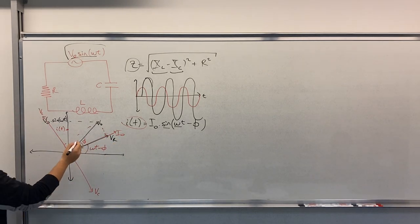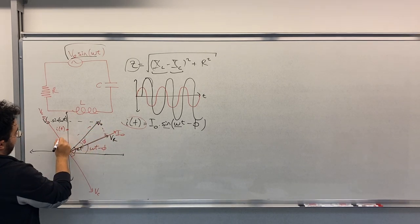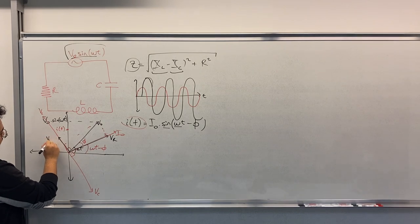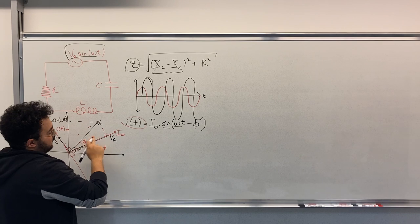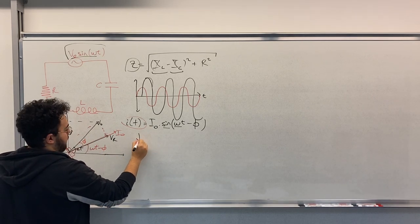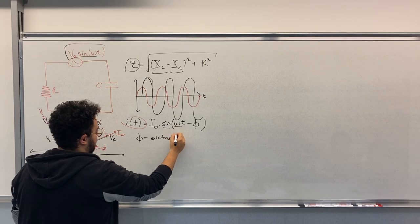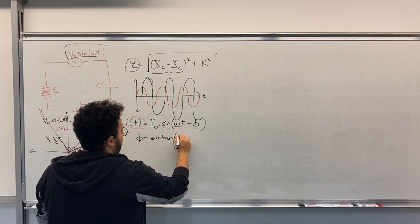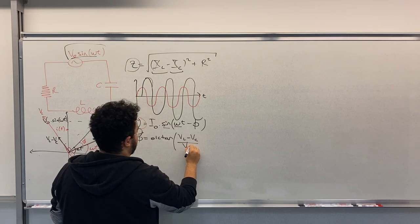Now this magnitude is VL minus VC. So we can calculate this angle equals to arctan of VL minus VC divided by VR.